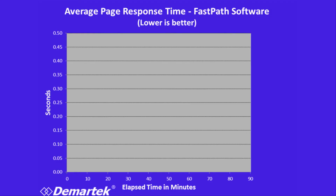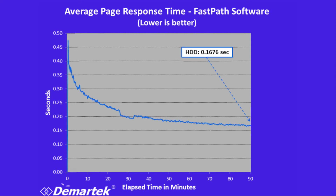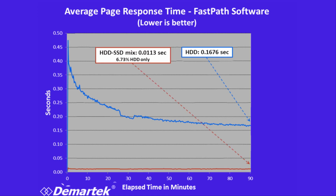Another measure is the page response time. This is how quickly the web server responded to the request from the client. Here we want a lower number — that would indicate a better response. The hard drive only, you can see over time, it got down to about 0.16 seconds. Whereas with the SSDs, you see it's very low, down at 0.01 seconds — 16 times faster than what we had with the hard drives.